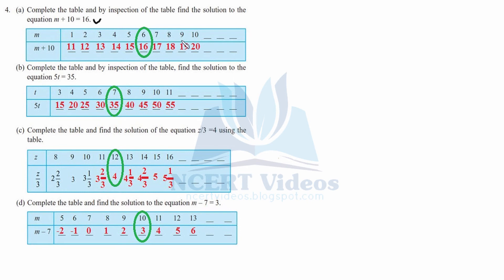It satisfies the given equation. The rest can be checked from the table. For part b: complete the table and by inspection find the solution to 5t equal to 35. Placing t equal to 3 gives 15. Placing 4 gives 20. Placing 5 gives 25. Placing 6 gives 30. Placing 7: 7 times 5 is 35 — so t equal to 7 is the solution.